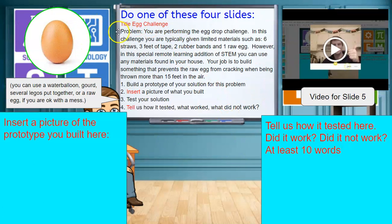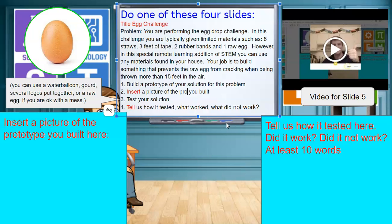Do one of these, if you want to do this slide, you need to build a device that would protect a raw egg when thrown into the air at least 15 feet and coming back down. You will insert a picture of the prototype that you built over here. Insert a picture of the prototype, all of the slides say that, of the prototype that you built.